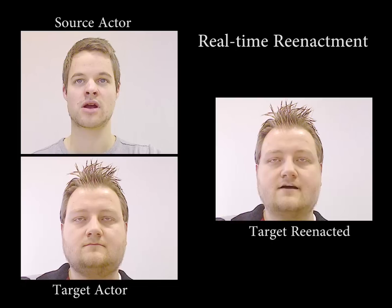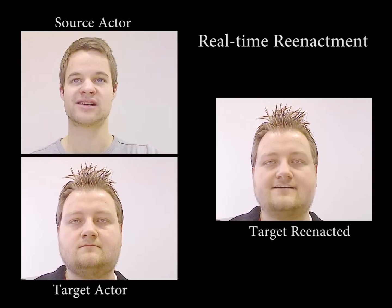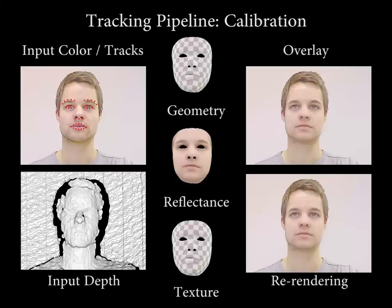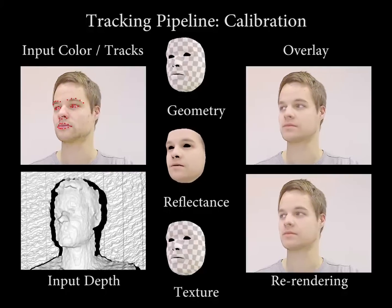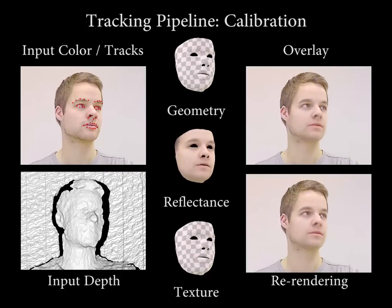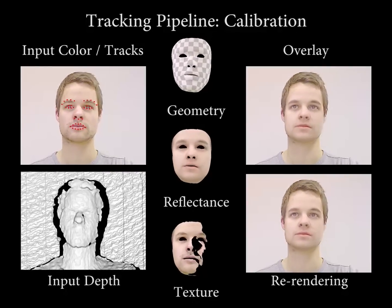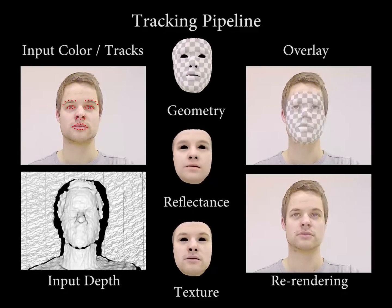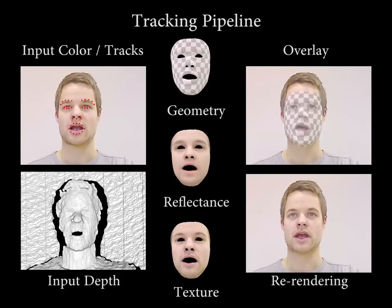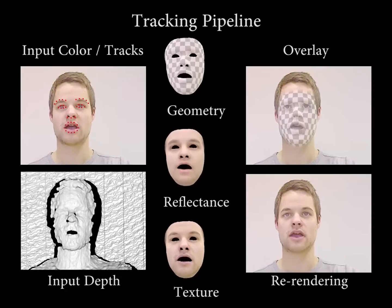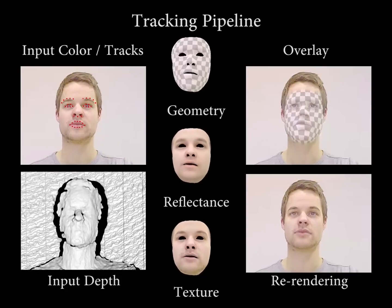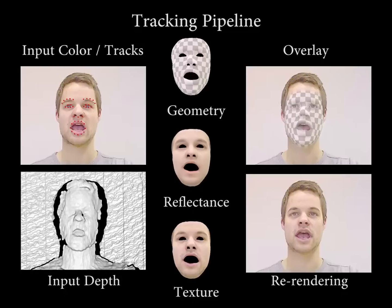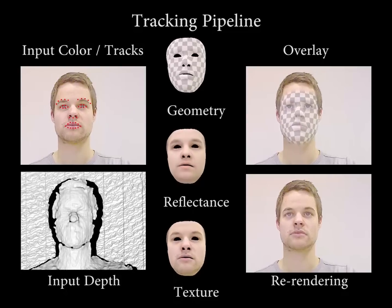Our method uses a new model-based tracking approach based on a parametric face model. This model is tracked in real-time from the RGBD input. Face model calibration for each actor is needed before tracking commences; real-time optimization first finds personalized face parameters. With this, we can begin real-time GPU-based tracking. The overlay of the rendered model with the video shows our highly stable and photorealistic results.